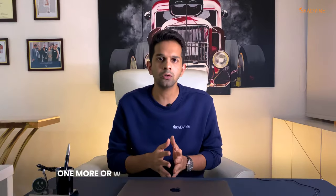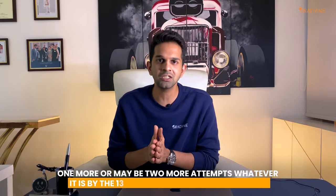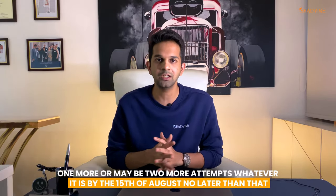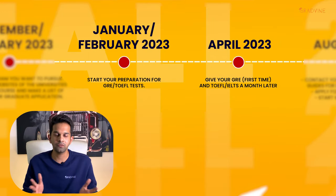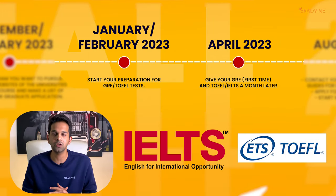Understand that universities don't care about how many attempts you give on the GRE, and usually your score tends to improve if you give more than one attempt. If you are not satisfied with your score in the April attempt, try and take one or maybe two more attempts — but no later than August 15th. In this timeline, between your first and second attempt, you can also give the IELTS or TOEFL since you are already in that flow of preparation. August 15th is the final deadline by which you must finish all your test scores.